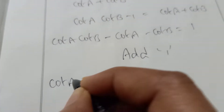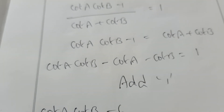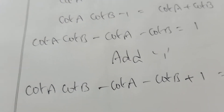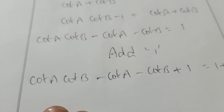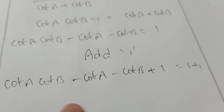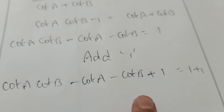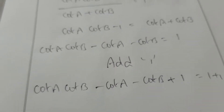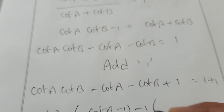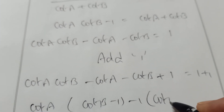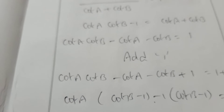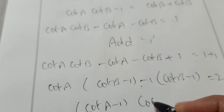Adding 1 on both sides to cot A cot B minus cot A minus cot B, you get the factored form: (cot A minus 1)(cot B minus 1) equals 2.